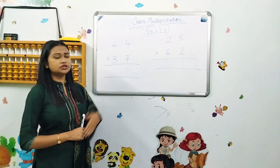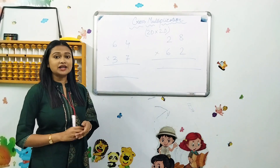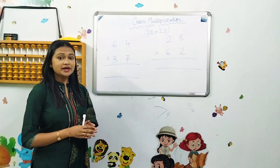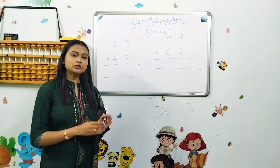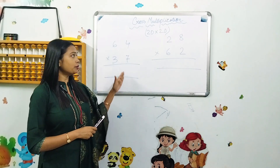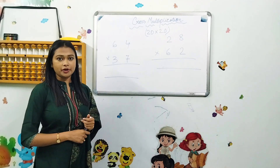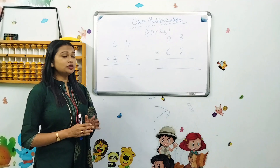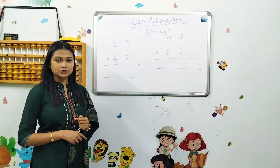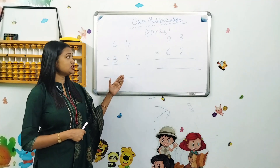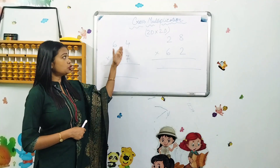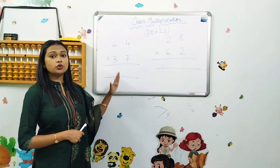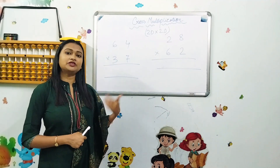This oncology is very easy. Today I am going to do this process — a cross-multiplicational process. I am going to learn two digits into two digits, meaning two digits into two digits.